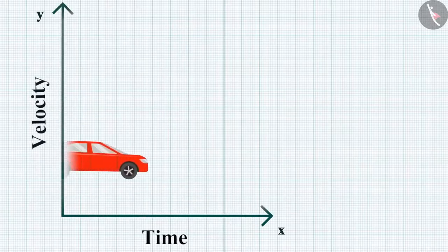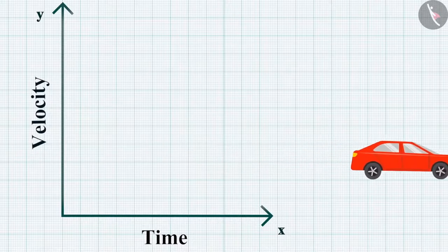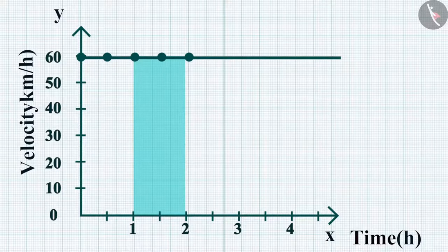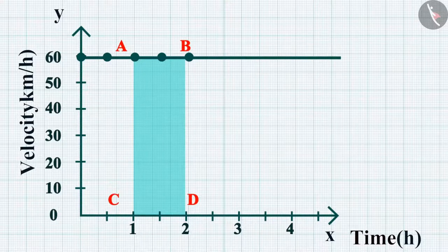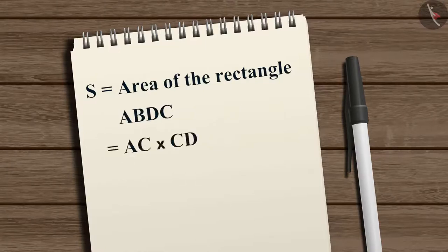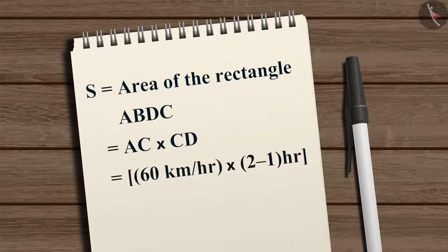To calculate the distance covered between time 1 hour and 2 hours, draw perpendiculars from the time points. The velocity of 60 km/h is represented by heights AC or BD, and the time interval by lengths AB or CD. The distance S equals the area of rectangle ABDC, which is AC multiplied by CD, equal to 60 km/h times 1 hour, which equals 60 km.